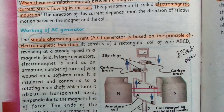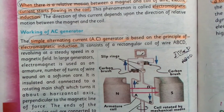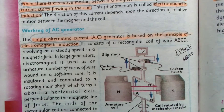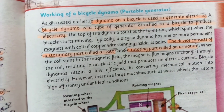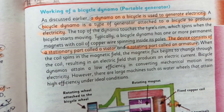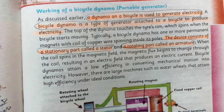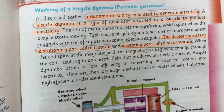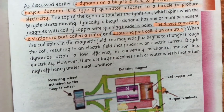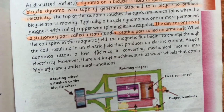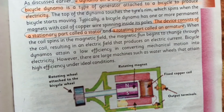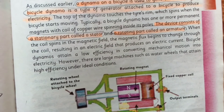The simple alternating current generator is used to generate electricity. A bicycle dynamo is a type of generator attached to a bicycle to produce electricity. The device consists of a stationary part called a stator and a rotating part called an armature.